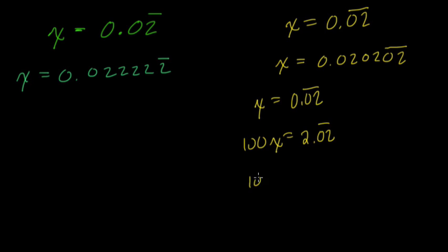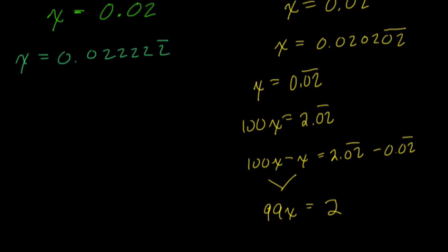And our proof is basically the same as before: 100x minus x equals 2.02 repeating minus 0.02 repeating. In algebra, 100x minus x is 99 groups of x. And over here, take away the 0.02 repeating from 2.02 repeating and just get 2.